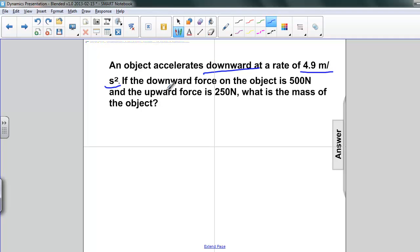I'm just going to underline downward. If the downward force on the object is 500 newtons and the upward force on the object is 250 newtons, what is the mass of the object?